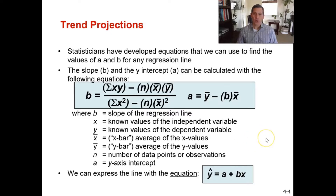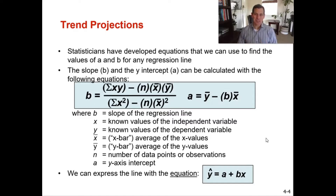Statisticians have developed equations we can use to find the values of A and B for any regression line, where A is your y-axis intercept and B is the slope of the regression line. The slope B and the y-intercept A can be calculated with the following equations. They look scary, but we're going to work through what all of those different symbols mean and you'll be able to calculate your slope or y-intercept given these two formulas.